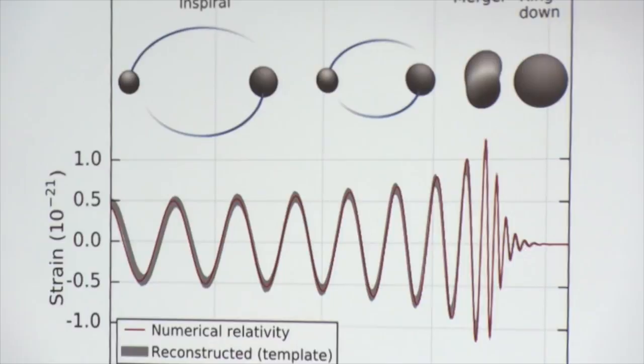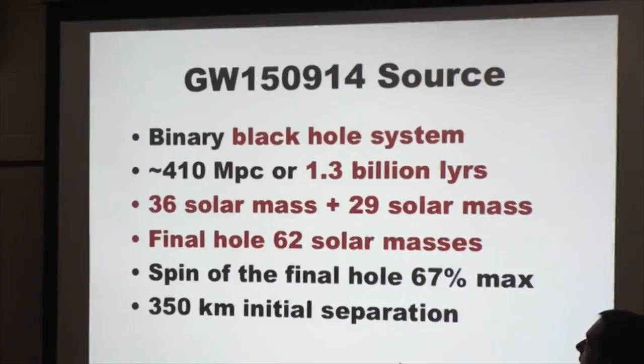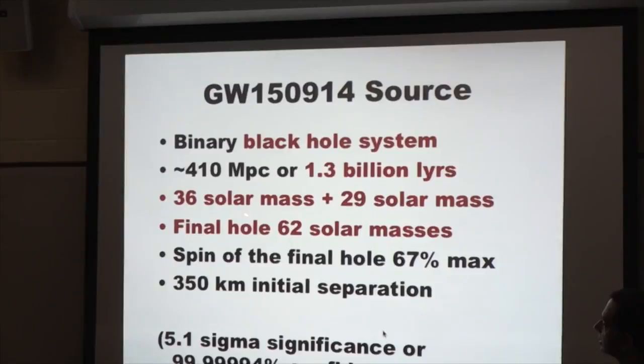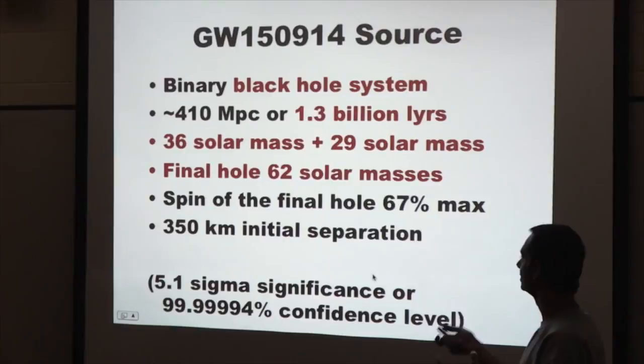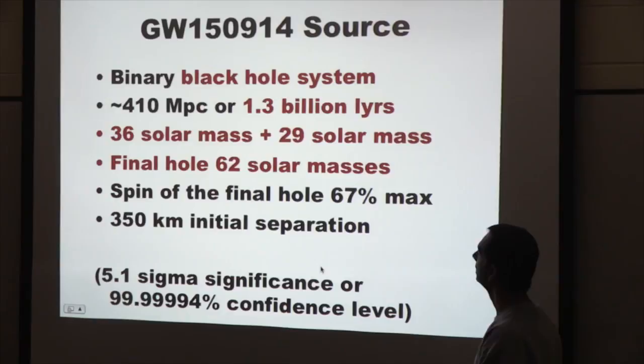Once cleaned up using matched filtering, the gray signal from the detector overlaps beautifully with the theoretical prediction in red — the closest template. It's clear the signal is from two black holes merging, and from the template used you can figure out the masses, spins, and other details of the black holes.